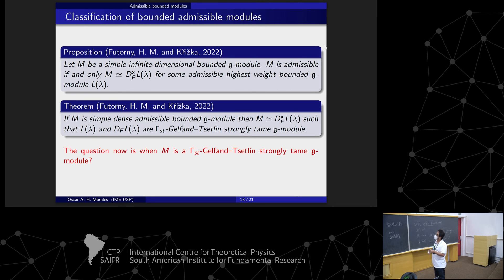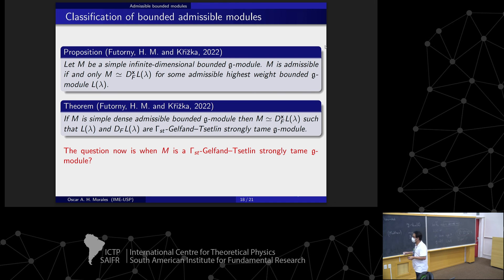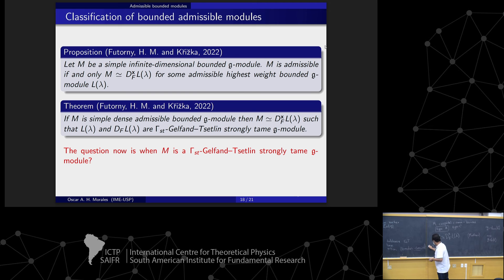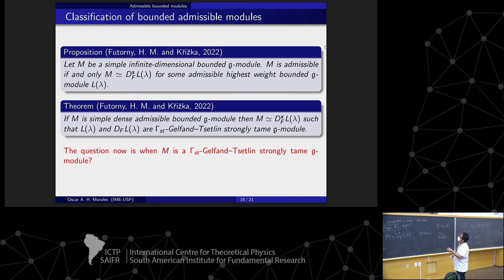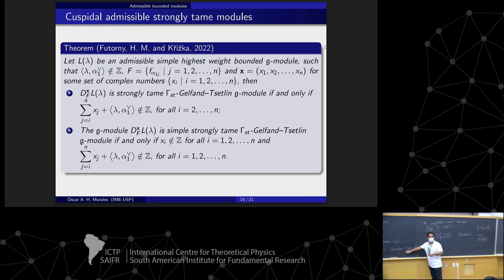In this theory M is not necessarily strongly tamed. Strongly tamed is L(lambda) and the localization of L(lambda) only. But in this case we have the basis of M using the classical formula — the action is the classical twisted formula using the functor of Mackey. This functor gives another action.